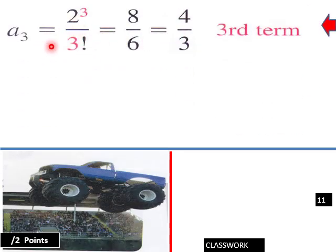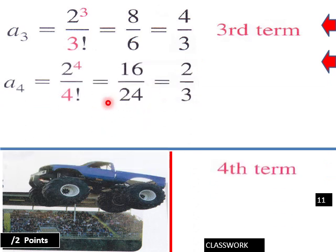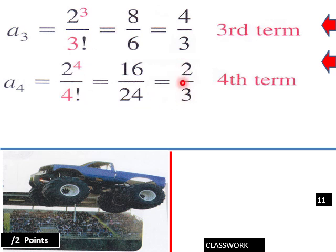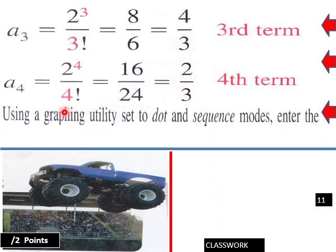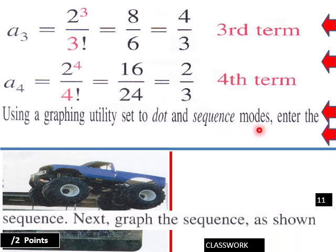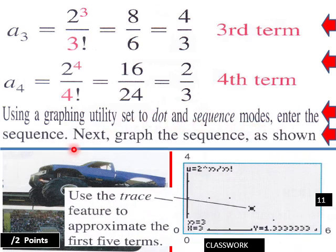Then a₃ = 2³ / 3! = 8/6 = 4/3. And a₄ = 2⁴ / 4! = 16/24 = 2/3. Using a graphing calculator set to dot and sequence modes, enter the sequence and graph it — your graph kind of falls quickly toward zero.